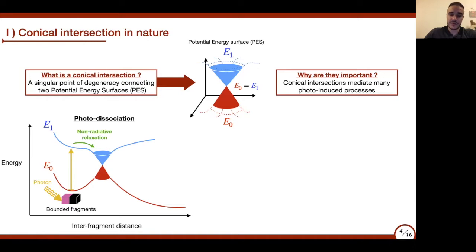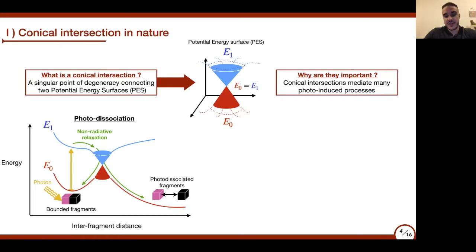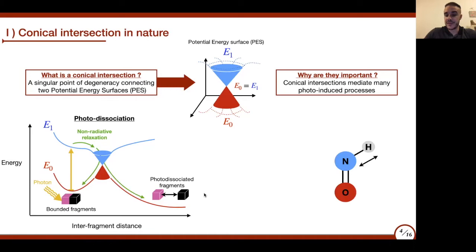Nuclear forces push the system to evolve on this surface, and it falls inside the conical intersection thanks to what is called non-radiative relaxation. At this moment, two different situations can arise: either the system goes back to its original situation—nothing new—or it can also go in the other direction and end up photodissociated. As you can see, the presence of a conical intersection can lead to a very different configuration for the system.